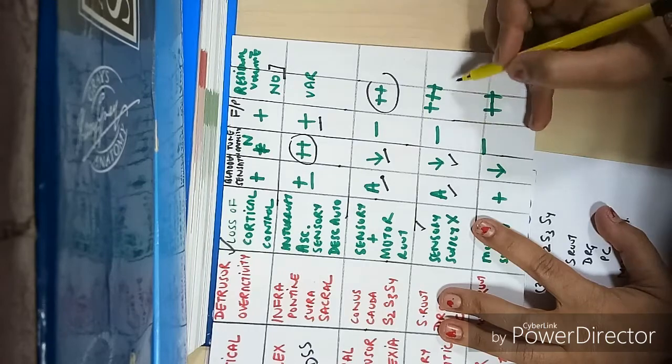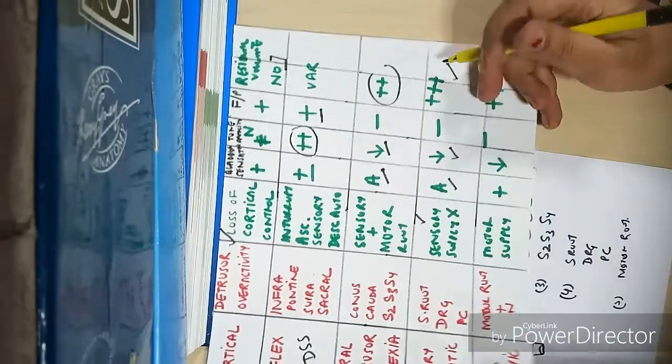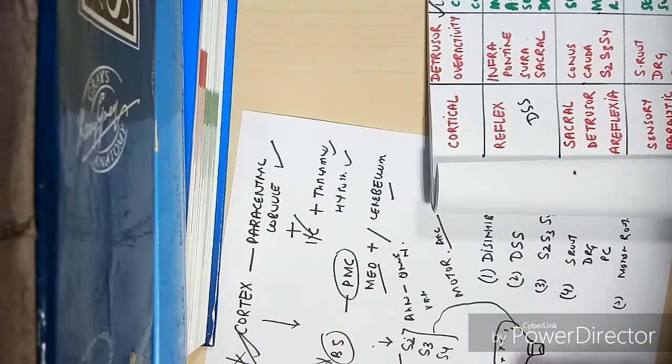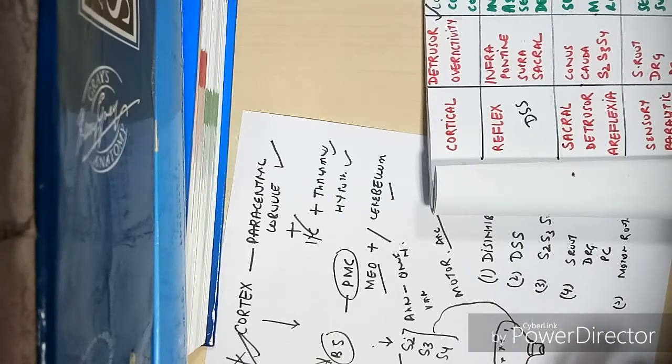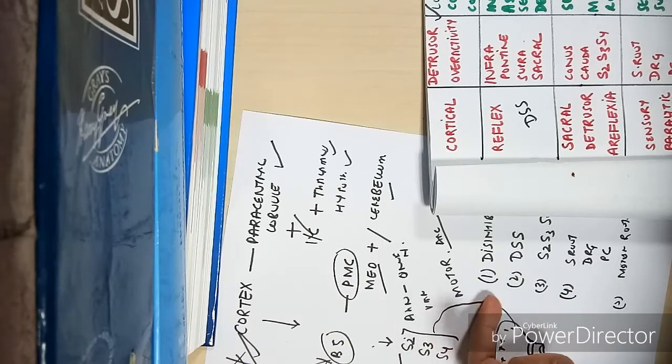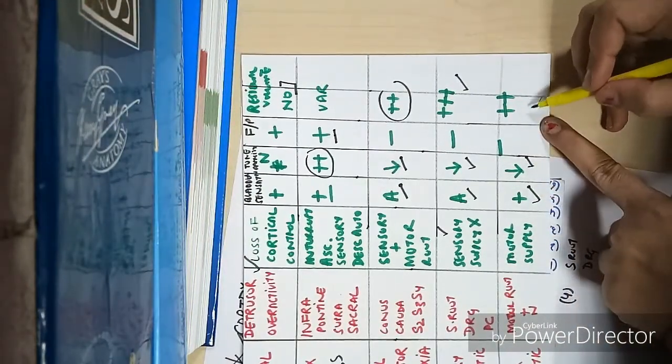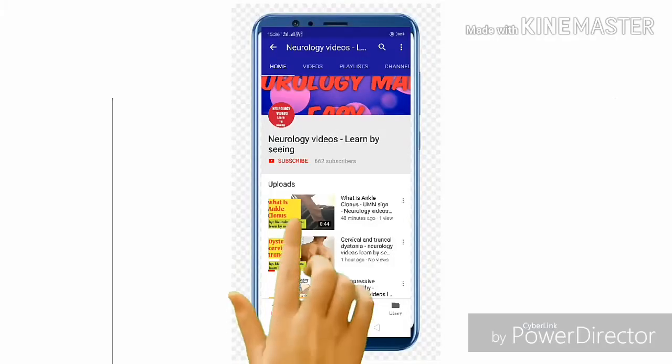In motor paralytic bladder, the patient is aware of bladder filling, but since the motor root is affected, awareness will be present while tone is decreased and residual volume is increased. The patient will have urinary retention.